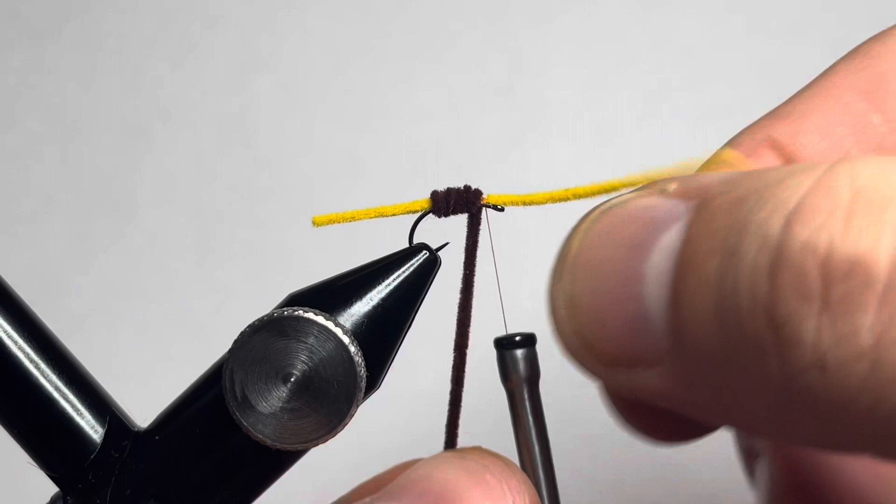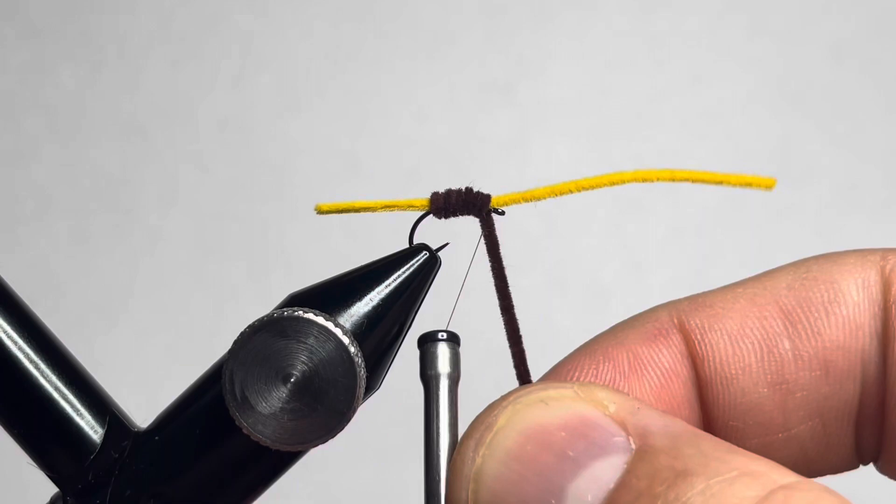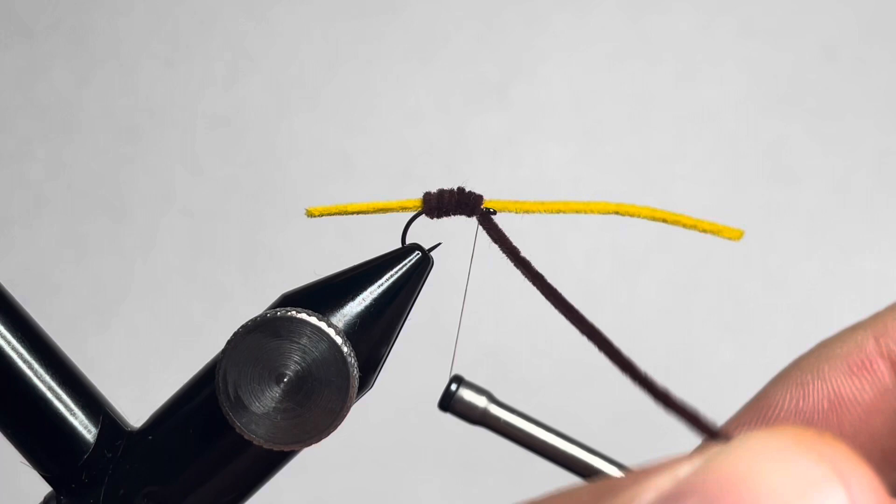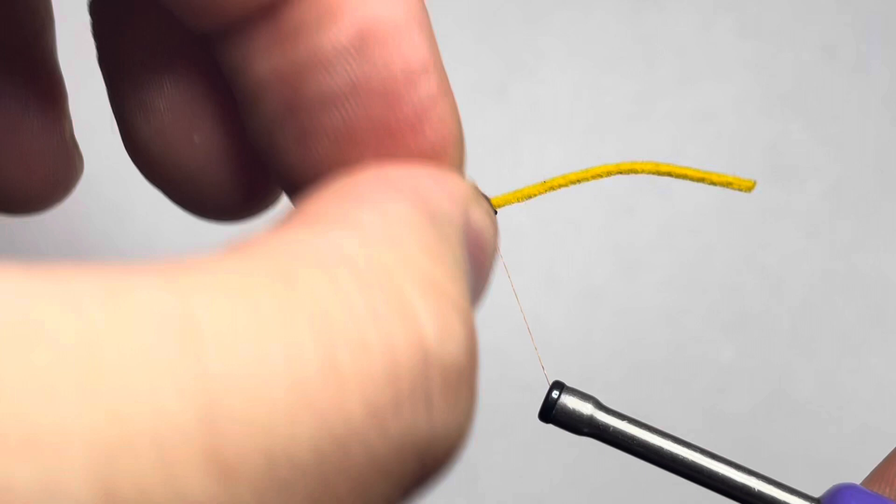Then we'll just do a crossing wrap to catch our chenille and lock that into place. Lock that in nice and tight. After three wraps, go ahead and go in front of it to move your thread out of the way, and then we'll trim off the tag end for the brown chenille.